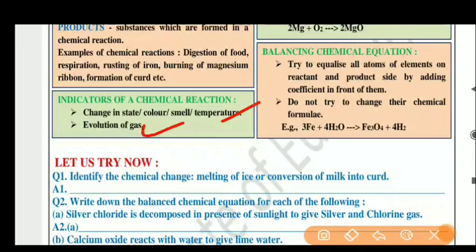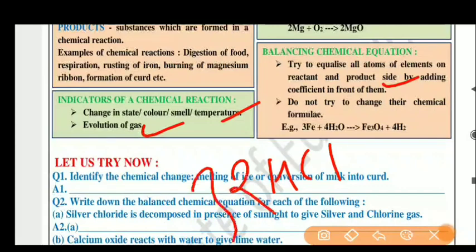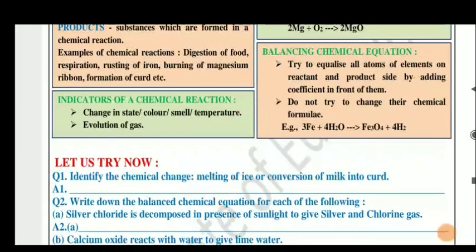To balance a chemical equation, try to equalize atoms of each element in reactants and products by adding coefficients. For example, with HCl, you can add a coefficient of 2 or 3. We use coefficients of reactants and products to equalize the amount of reactant and product — the amount of reactant equals the amount of product. You also know the law of conservation of mass.